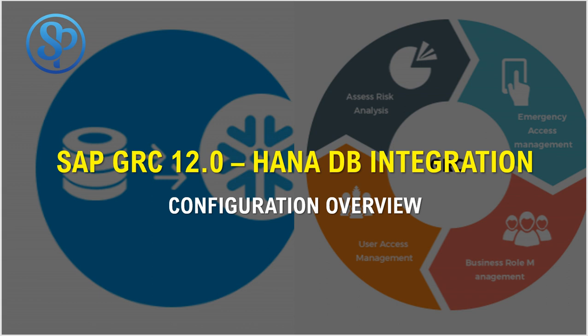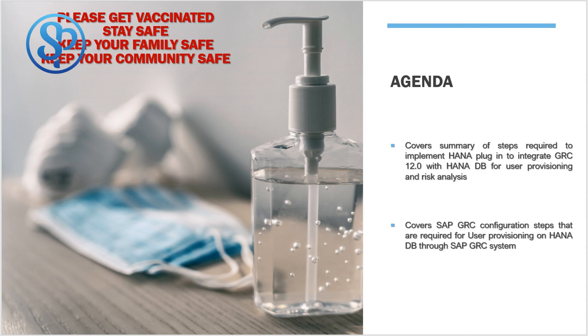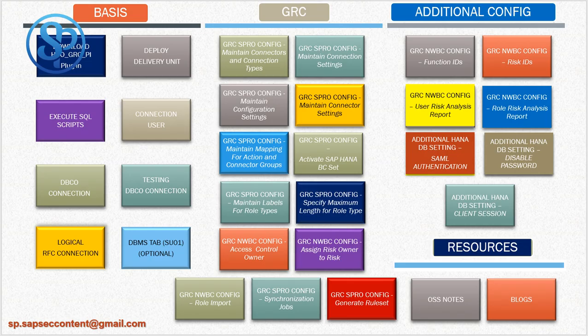This video will give you an overview of the configuration steps required for integrating HANA database with GRC12 for user provisioning and risk analysis purposes. We are going to cover a summary of the steps required to install and implement the HANA plugin for GRC12 integration, and also go through the configuration steps in GRC required for user provisioning on HANA database through GRC. This video is divided into two parts: basis-related steps and GRC-related steps, with a couple of additional configuration examples.